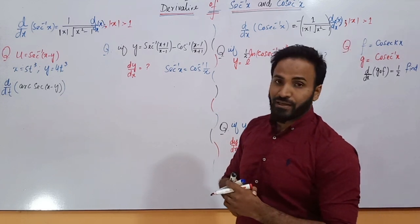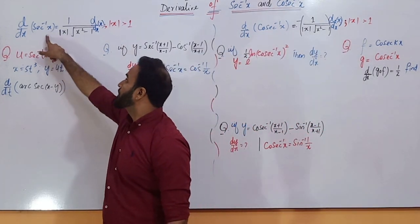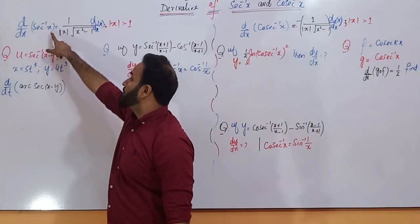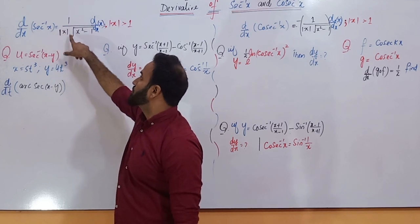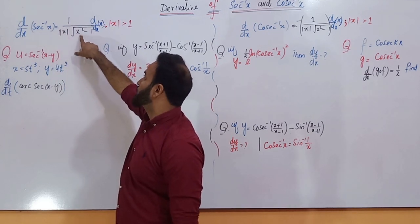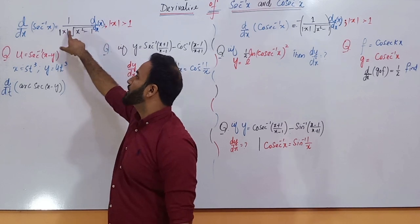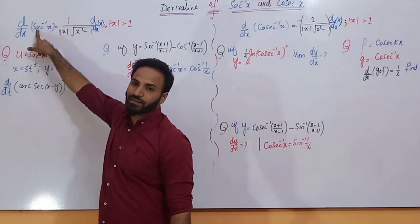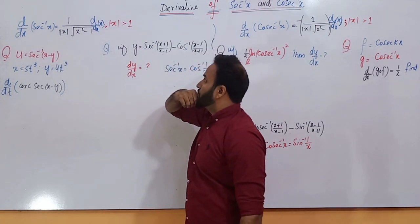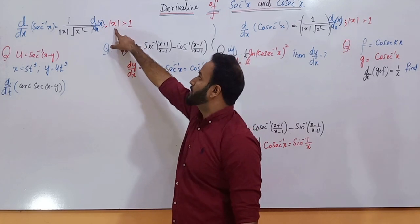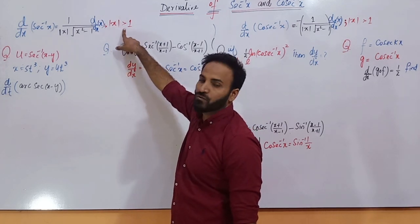What is the derivative of secant inverse x? It is equal to 1 over absolute x times square root of x squared minus 1, where the value of x inside the secant inverse satisfies absolute x greater than 1.